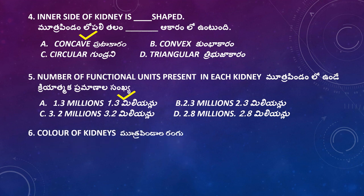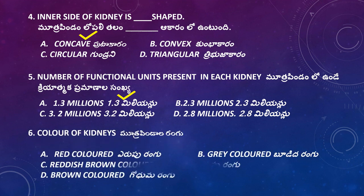Question: What is the color of kidneys? Options: Red color, Gray color, Reddish brown color, Brown color. The right answer is Reddish brown color.